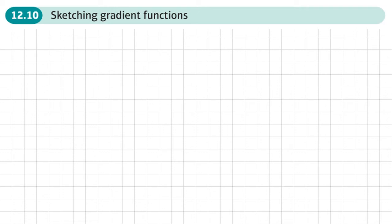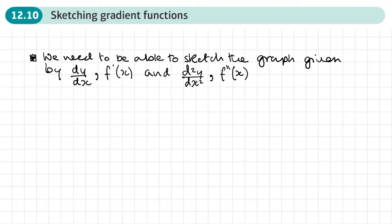This is the 10th section of chapter 12 on differentiation, and this section is about sketching gradient functions. What we need to be able to do is sketch the graphs given by either the first derivative or the second derivative, or even both.